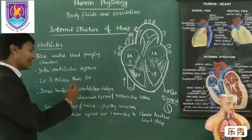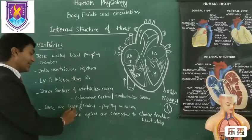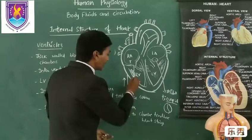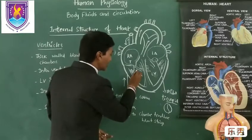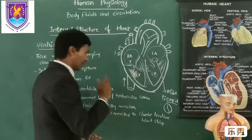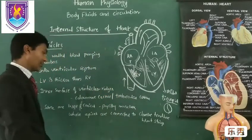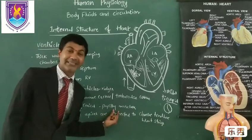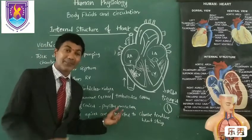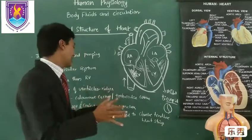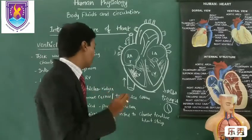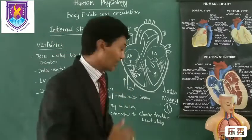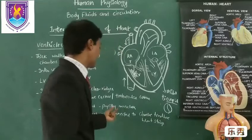Among these ridges, some are very large and conical in shape. These large conical ridges are called papillary muscles. Among the columnae carneae, a few are large and conical in shape, and these are specifically known as papillary muscles.